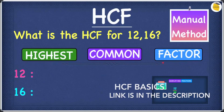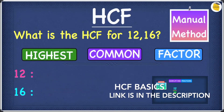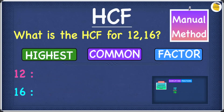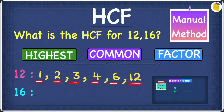We're going to first find the factors for 12 and 16. The factors of a number are anything that goes into a number exactly without leaving any remainder at all. The factors of 12 are: 1, 2, 3, 4, 6, and 12.